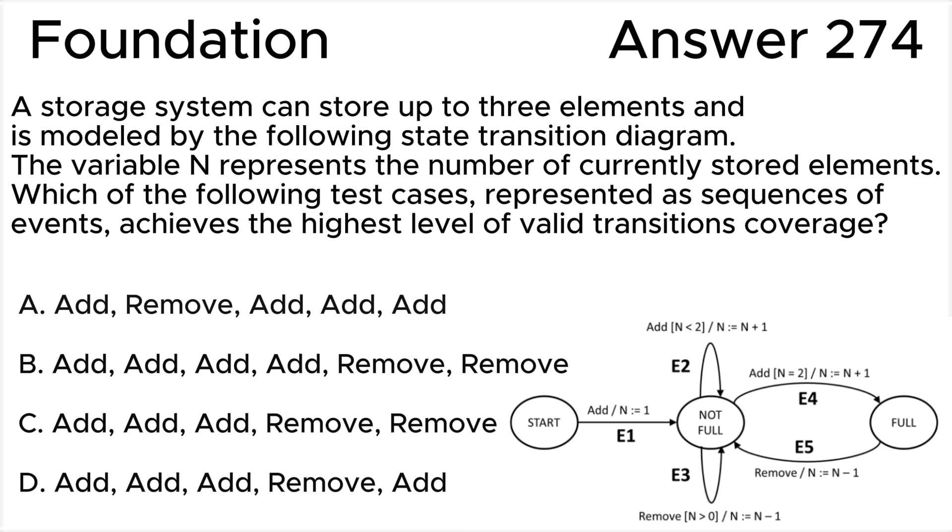Let's refer to the transitions as E1, E2, E3, E4, E5 as in the picture. The variable N denotes the number of elements currently stored. Each Add event increases it by one, and each Remove event decreases it by one.